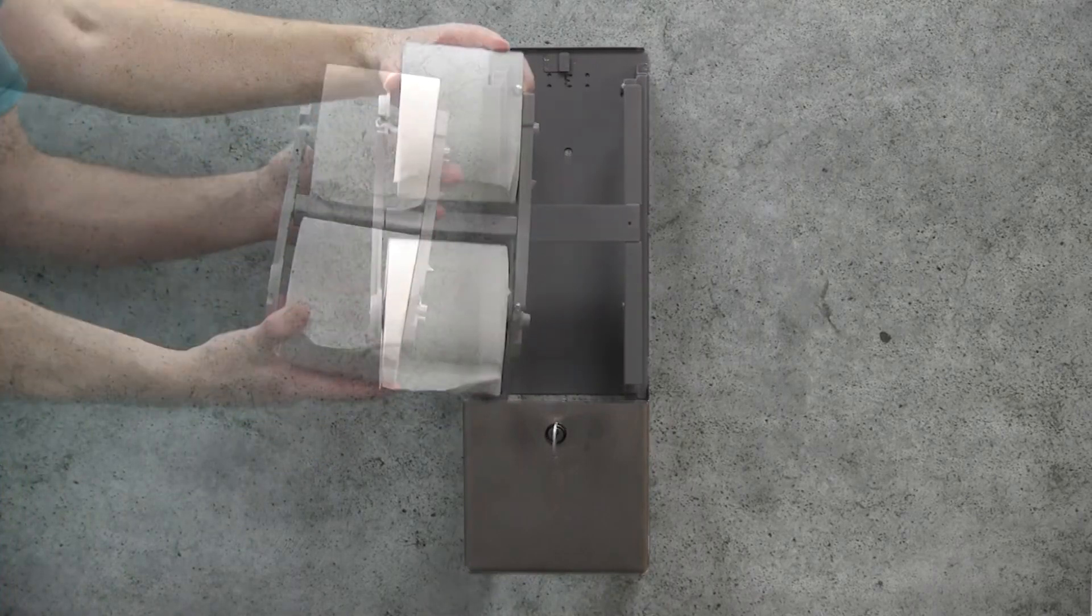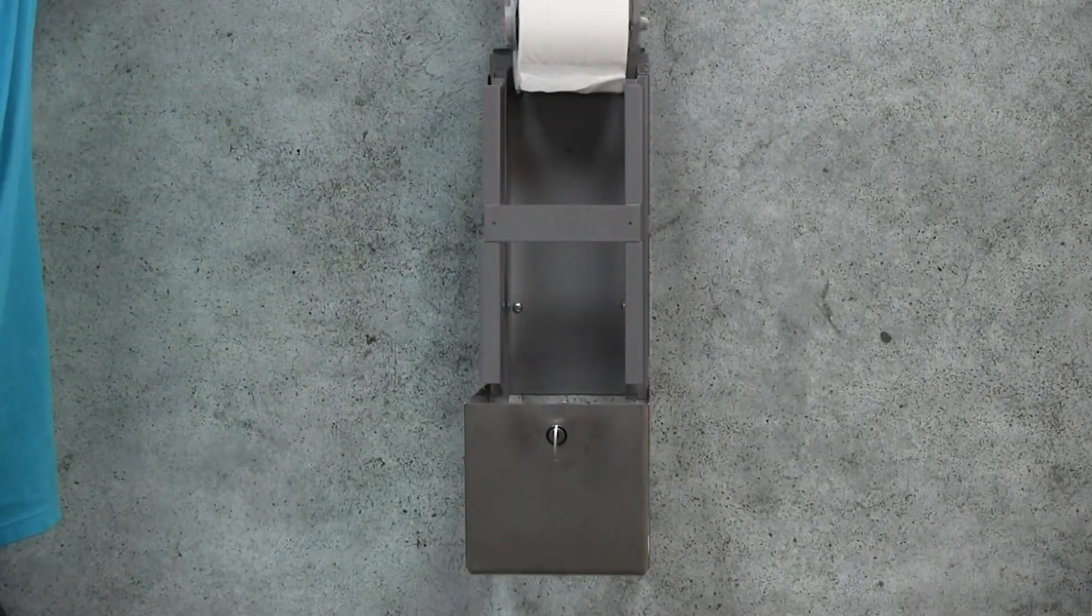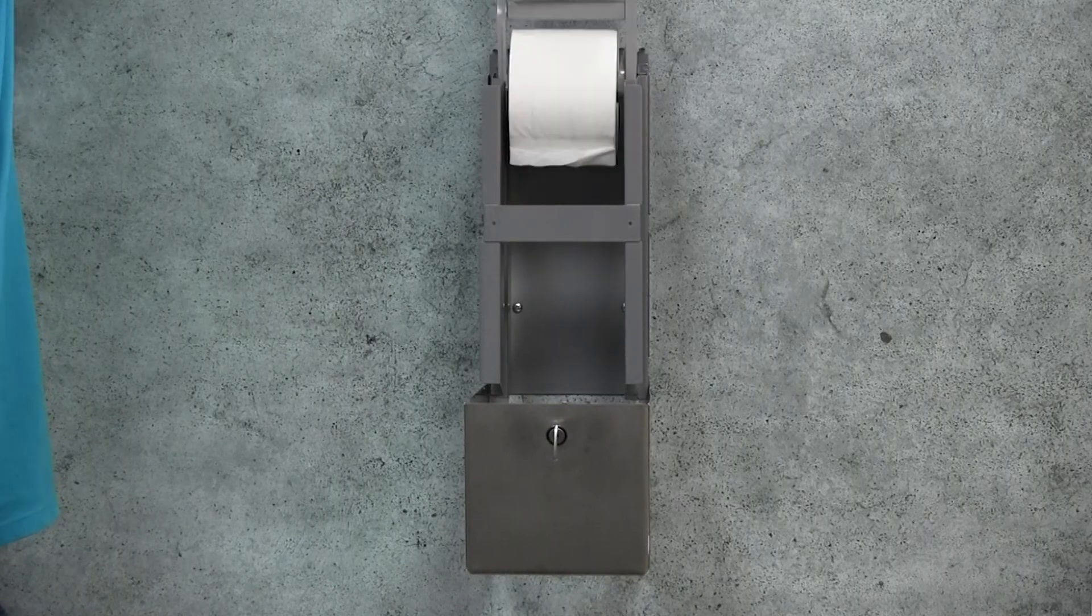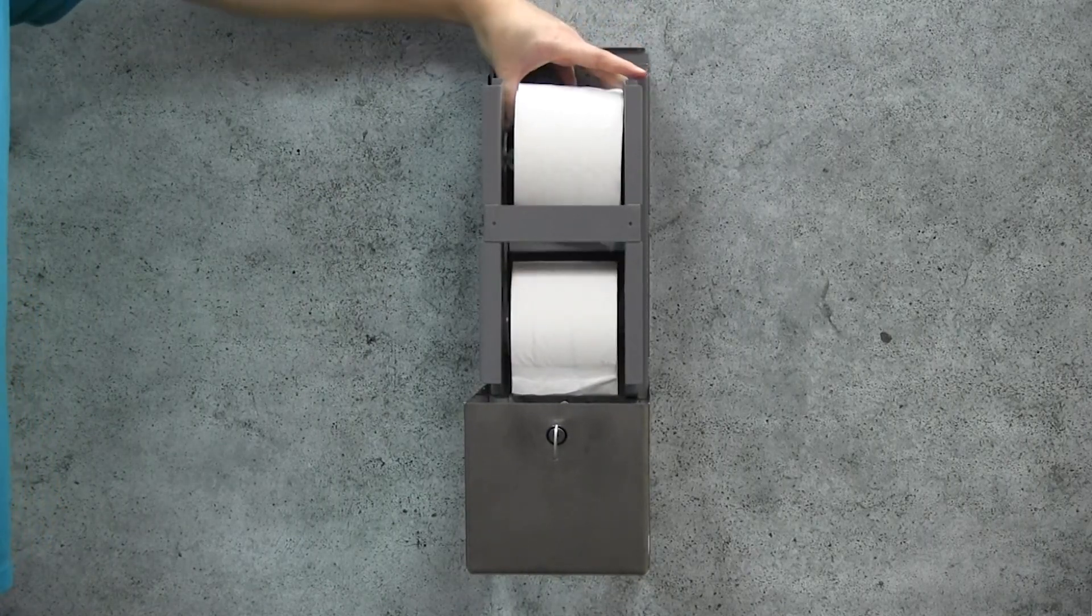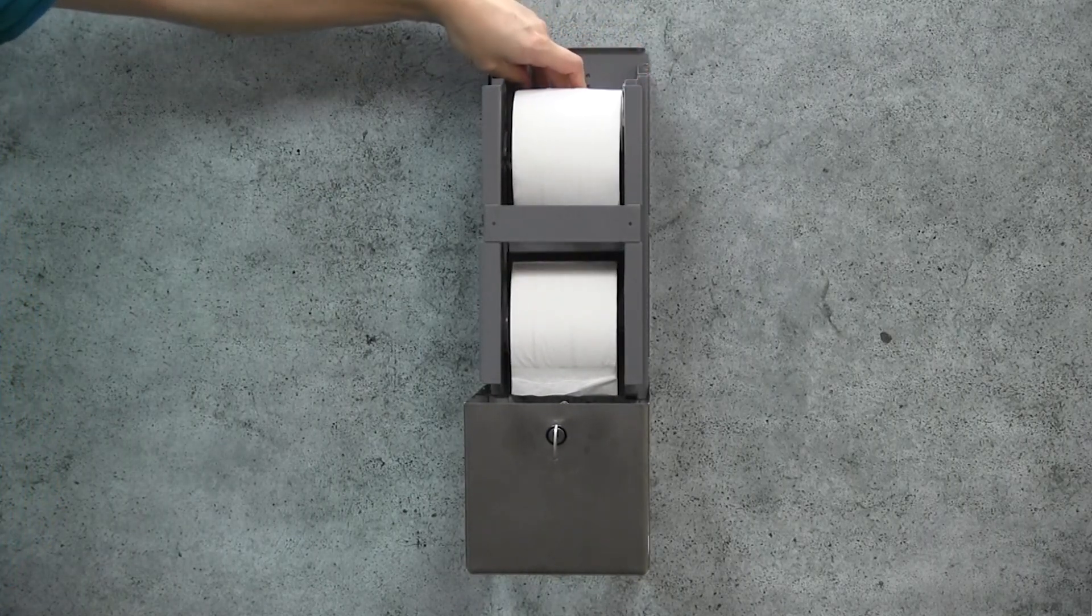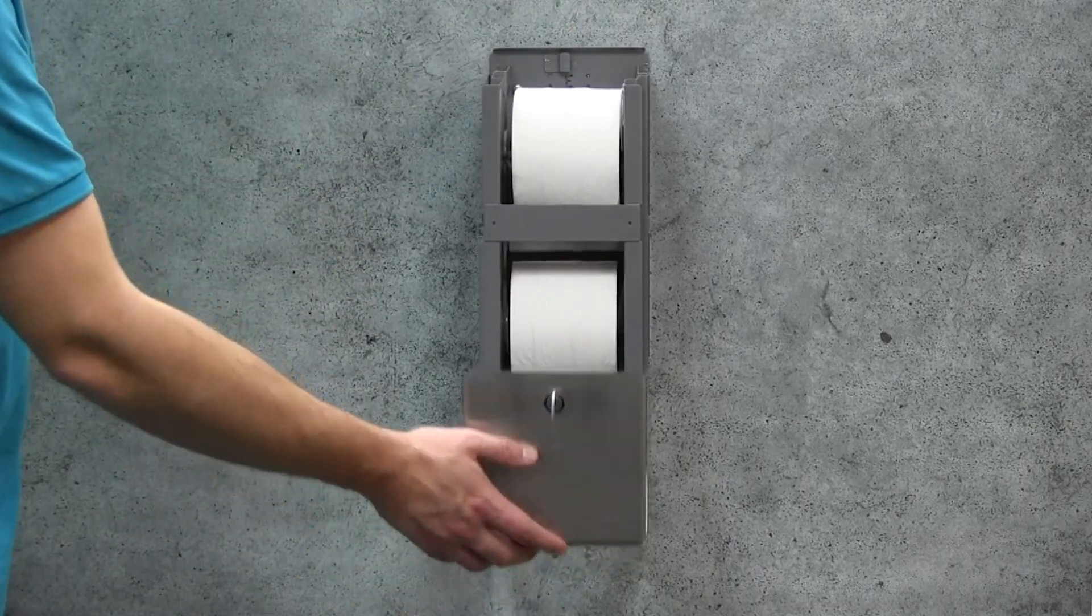Align the roll transfer sled with the side rails and return to the dispenser. Close the dispenser.